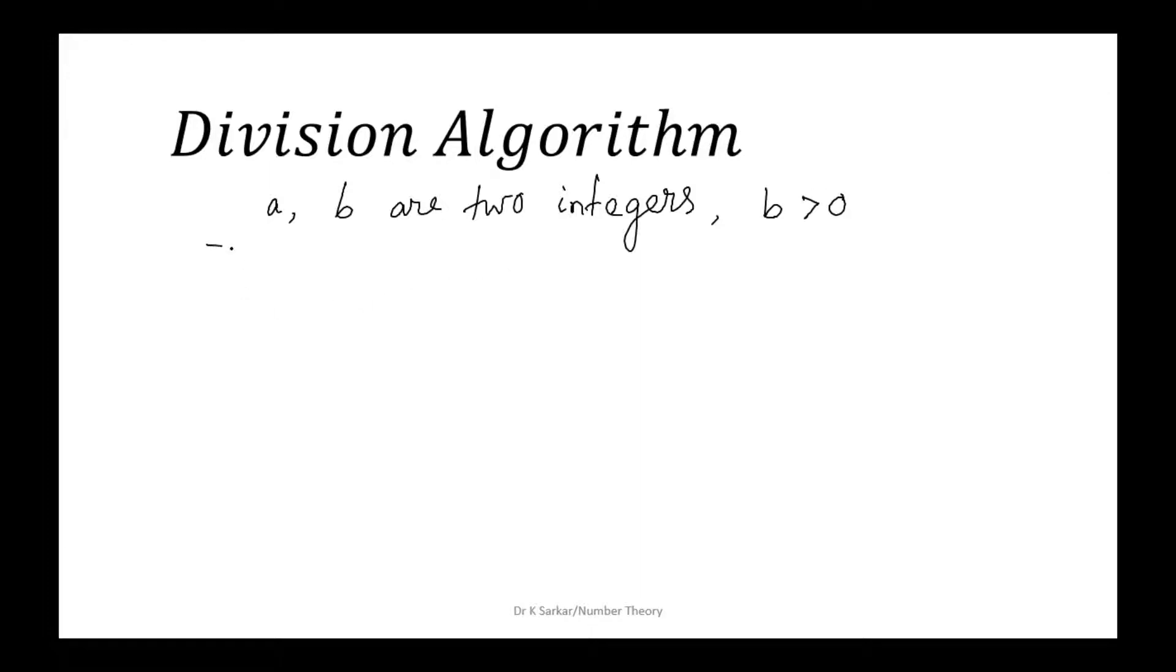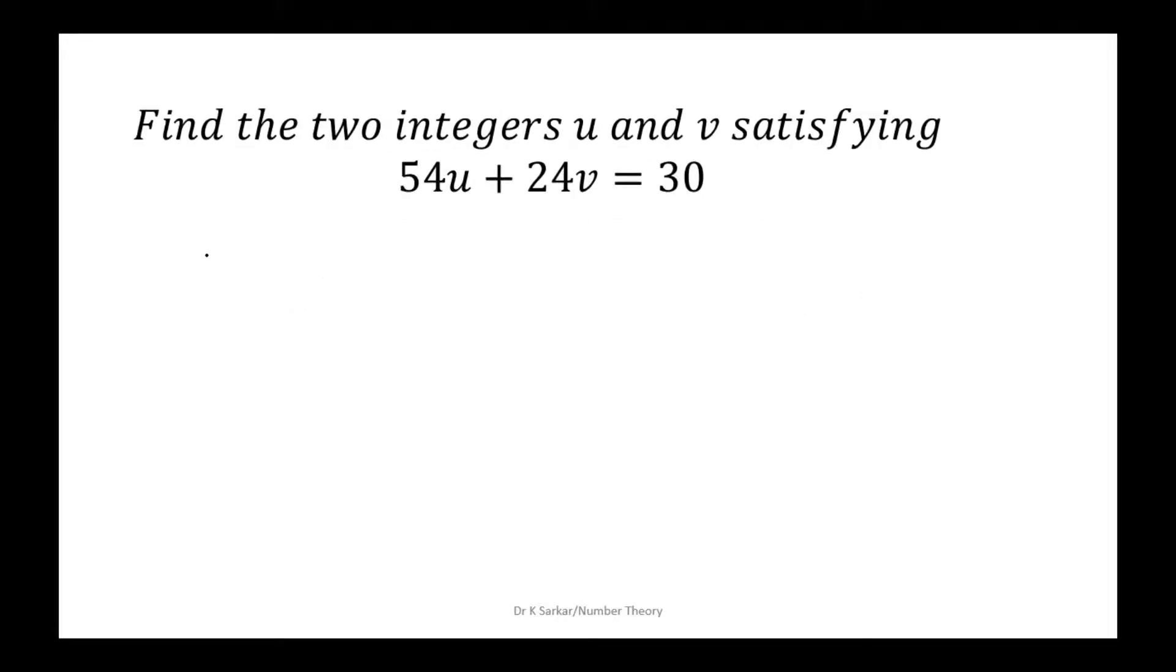There exist unique integers q and r such that a equals bq plus r, where r is less than b and greater than or equal to 0. Applying division algorithm,